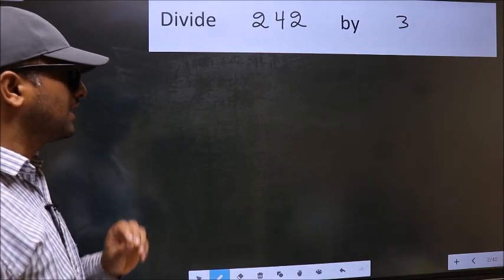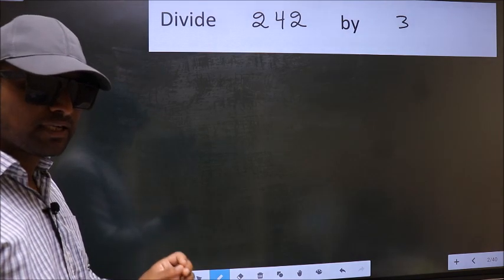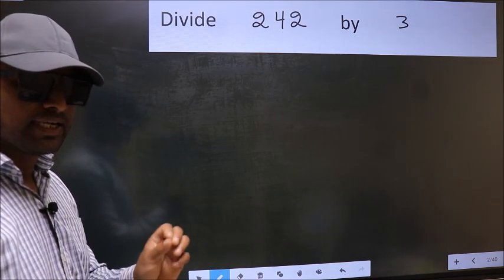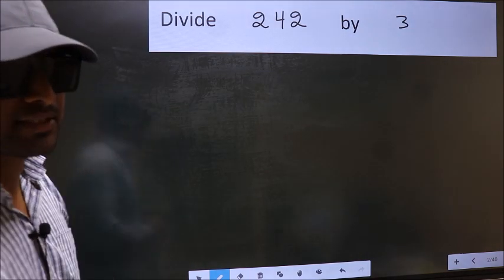Divide 242 by 3. While doing this division, many do this mistake. What is the mistake that they do, I will let you know. But before that, we should frame it in this way.